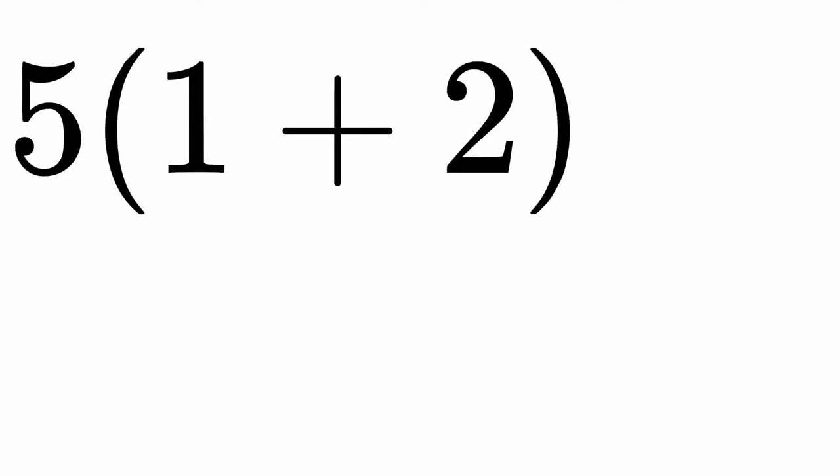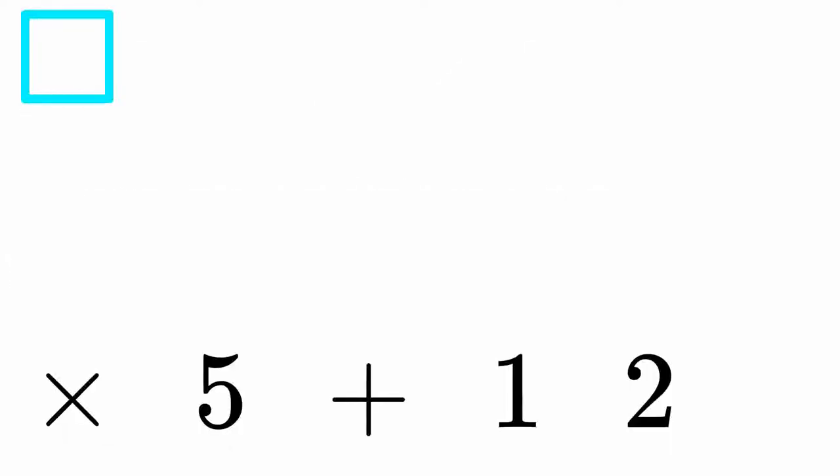For instance, 5 times 1 plus 2 is written as multiply 5 plus 1 2 without any brackets.